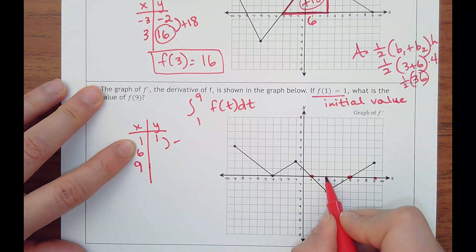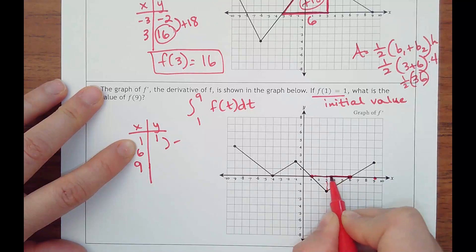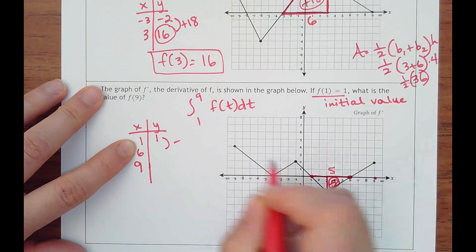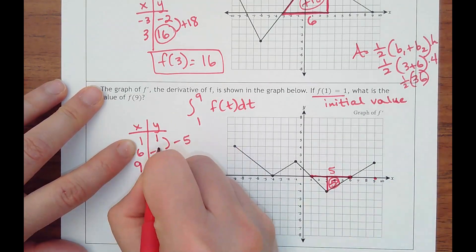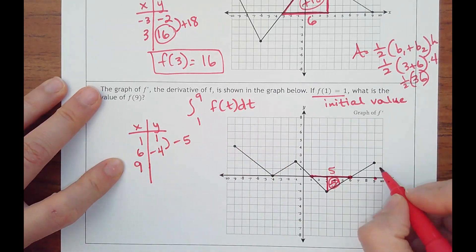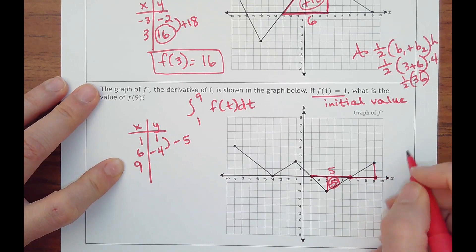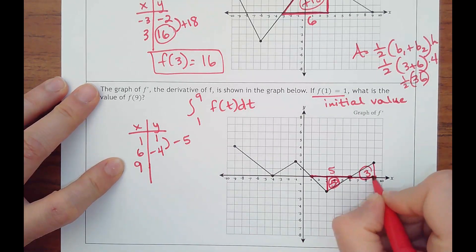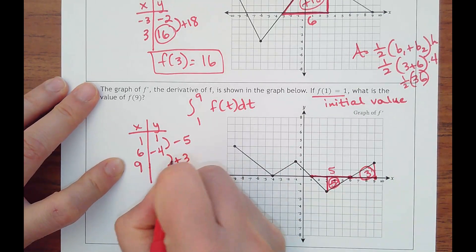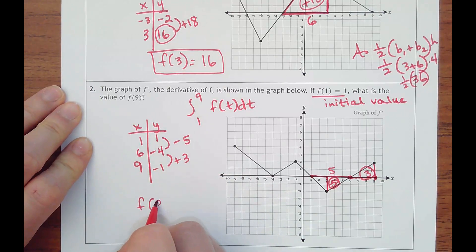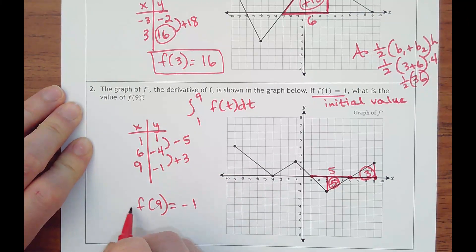My triangle has a base of five and a height of two. Two times five is ten, half of ten is five, so I should be subtracting five. One minus five would be negative four. And then my other triangle is three times two is six, half of six is three, and it's positive. Negative four plus three is negative one, so f of nine on the original function must have been negative one.